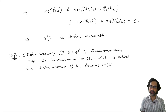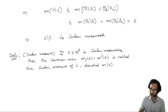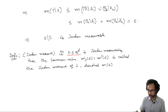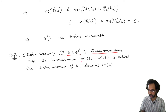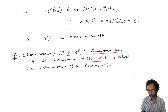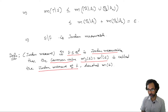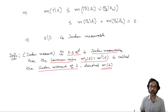Now we can state the definition for Jordan measure: given a Jordan measurable subset E of R^d, the inner Jordan measure equals the outer Jordan measure, and we call the common value the Jordan measure of E, denoted M(E).